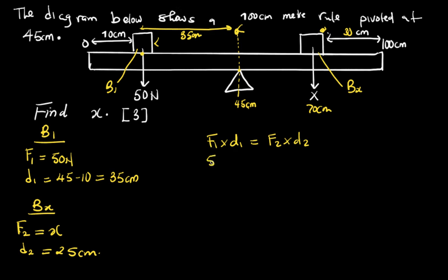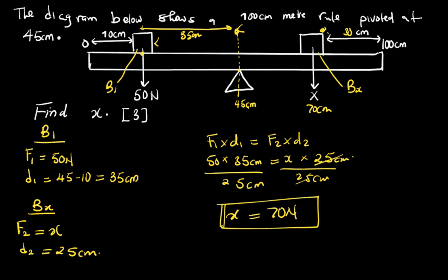F1 is 50, D1 is 35. There's no need of changing centimeters to meters since there's an equation on both sides. F2 is X multiplied by D2, which is 25 centimeters. So from here it will be over 25 centimeters. How? 50 multiplied by 35, then you divide by 25 gives me 70 newtons. That's the force, the value of X.